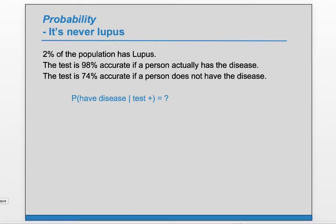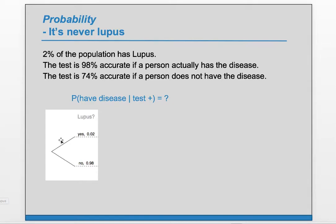In order to answer this question, a tree diagram will be very helpful. To set up our tree diagram, the first branch will be whether the person has lupus or not. We know that 2% of the population has lupus, so we'll have a yes-no here — 2% yes and 98% no.